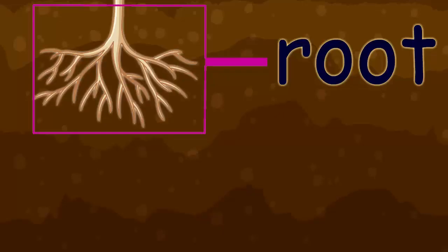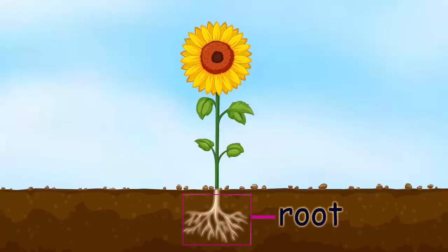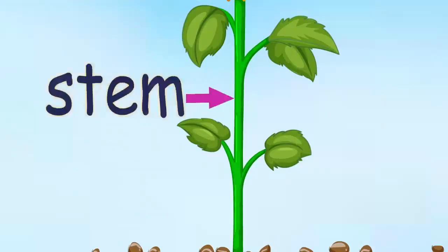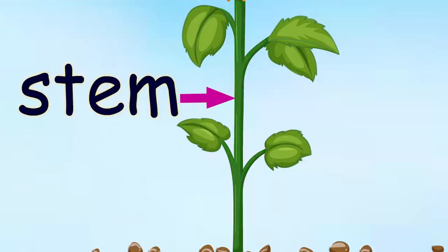The roots are hidden under the soil. Roots absorb water and nutrients from the soil. The stem is the middle part of a plant which is above the soil. The stem transports the nutrients through the plant to the leaves.